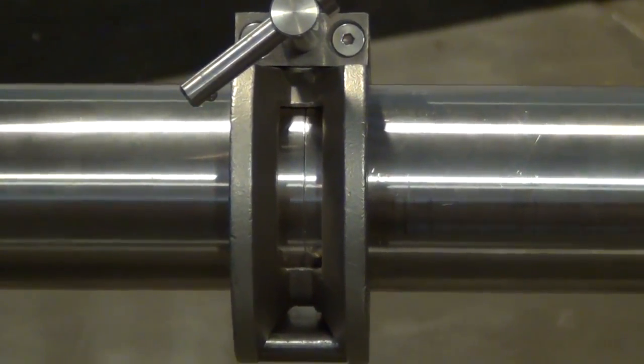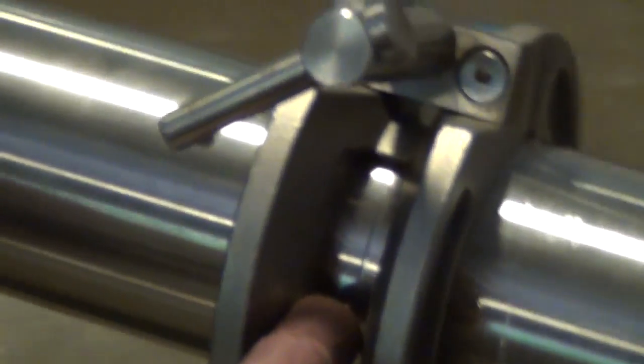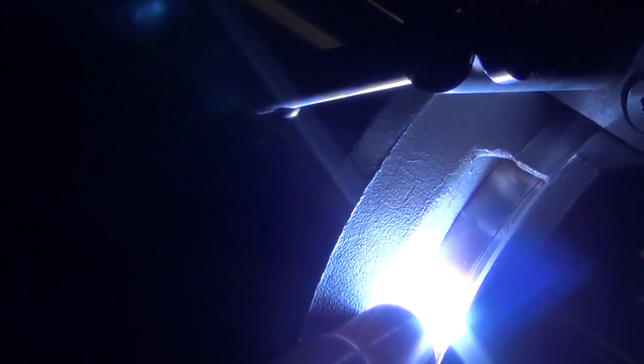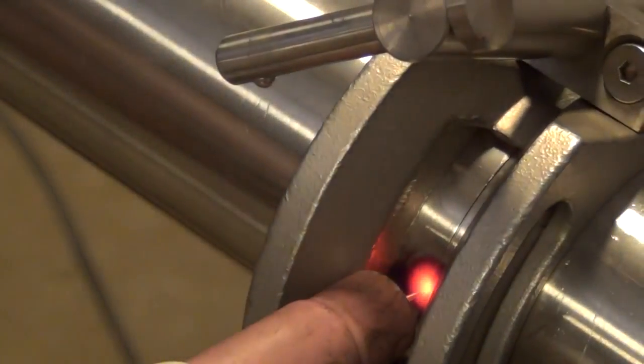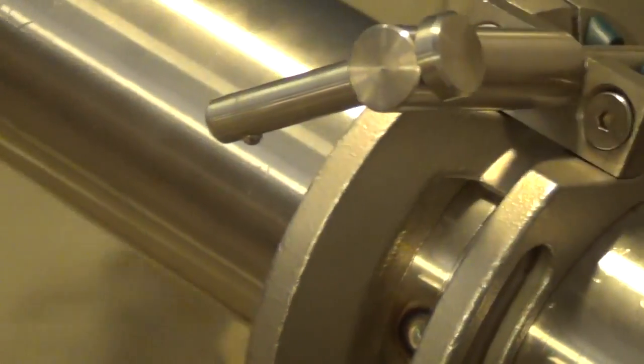How it works basically is you take your TIG torch. You lay it here on the tapered edge. And then you tack. You got one here and then I can go over here opposite to my window and do the same.